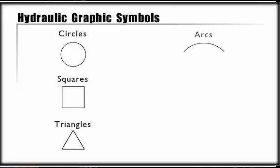The elementary forms of symbols are circles, squares, triangles, arcs, arrows, dots, and crosses.